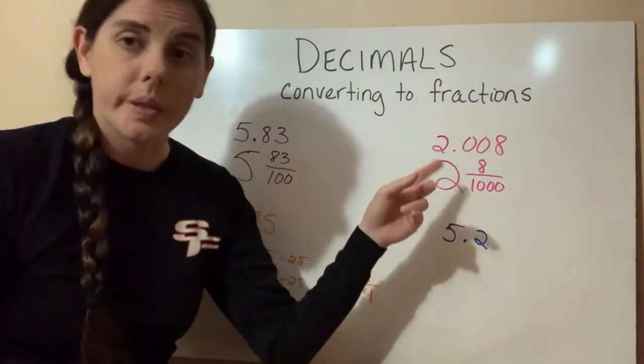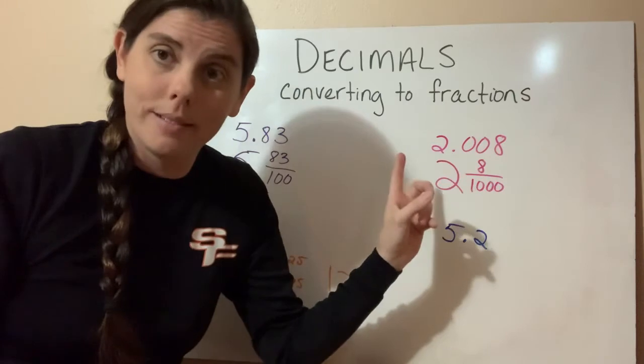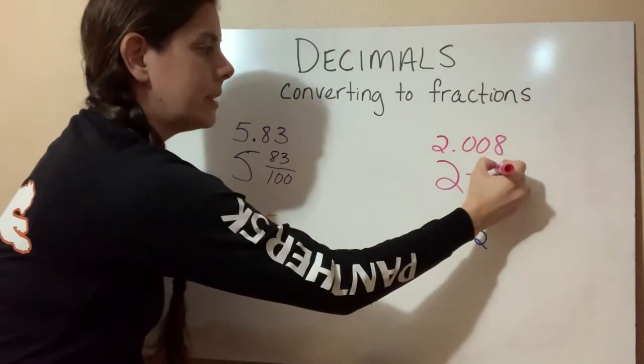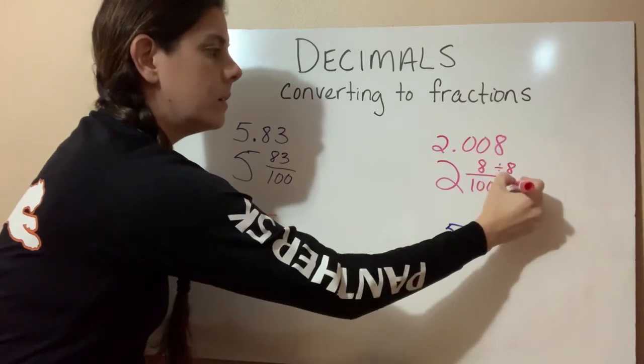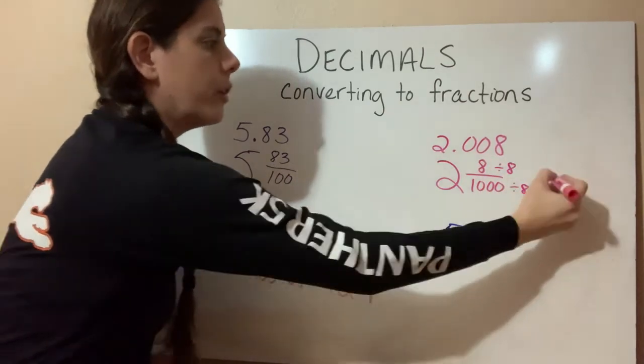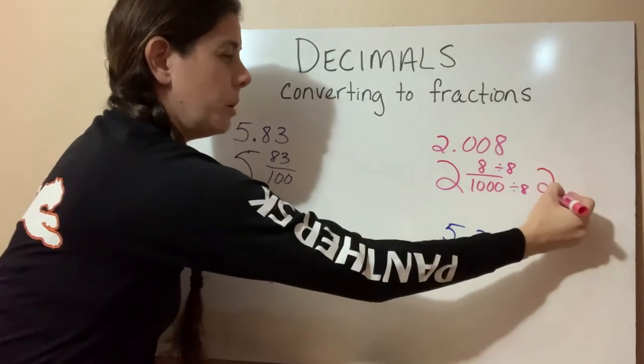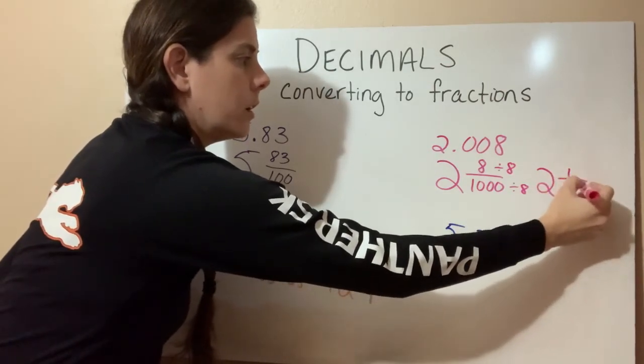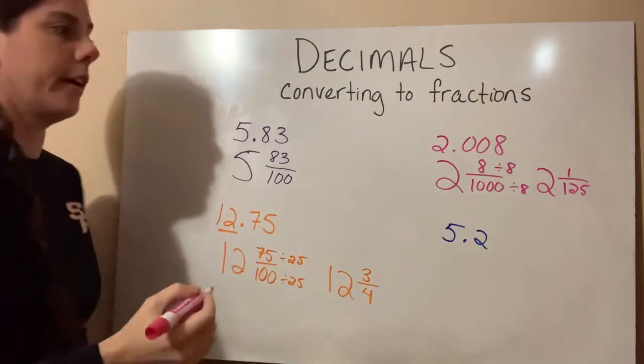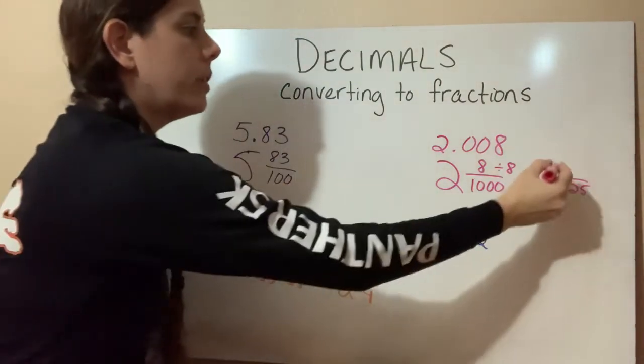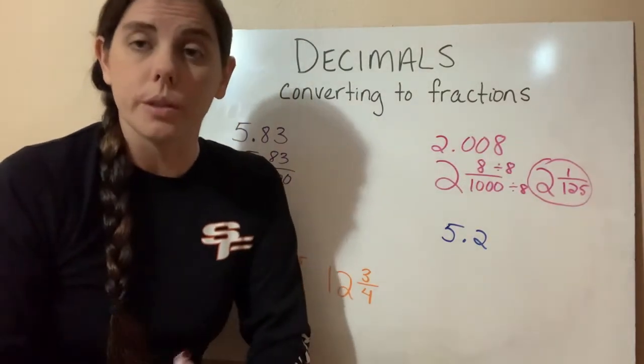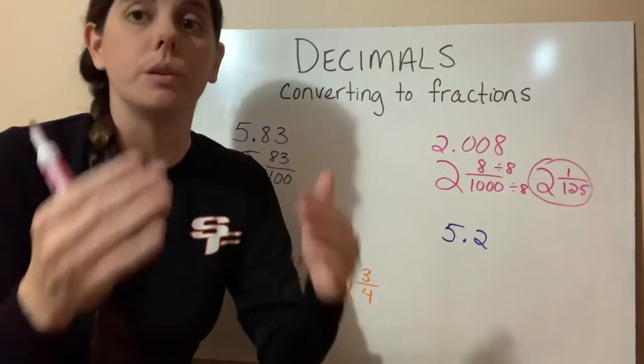So can we reduce 8 over 1,000? We can. And we can divide both of these by 8. And if we do that, our new answer is going to be 2 and 1 over 125. So this would be the answer we would want to put for our homework or quizzes or exams. Always make sure that you reduce.